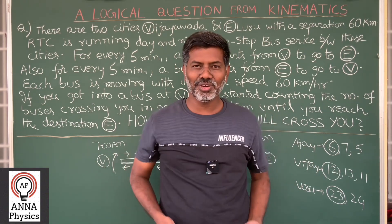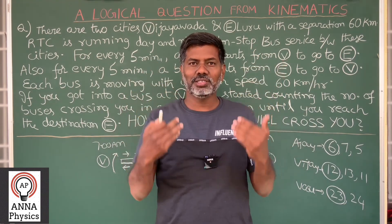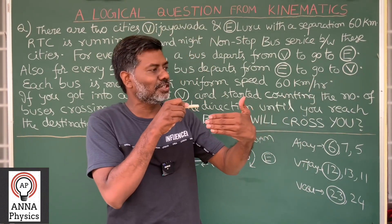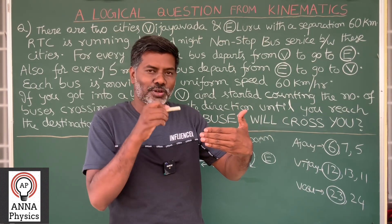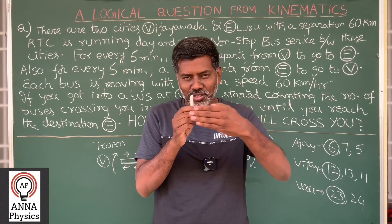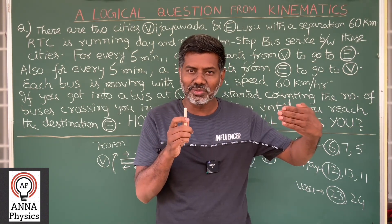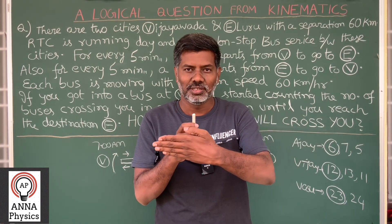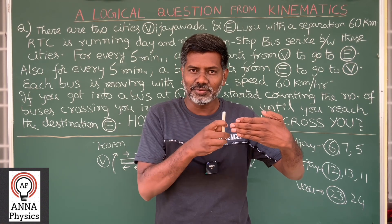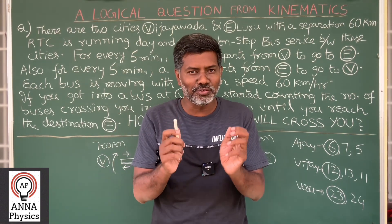But this time, you are not a standing person — you are inside a moving frame, you are in a moving bus. You might feel you are sitting and at rest, but you should not forget the fact that your bus is moving at 60 km per hour and the opposite bus is also coming at 60 km per hour. With respect to your frame, the opposite bus appears to move at 120 km per hour. Then right after one bus crosses you, the next bus will take only 2 and a half minutes to cross your bus, because both are approaching each other.